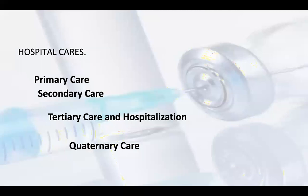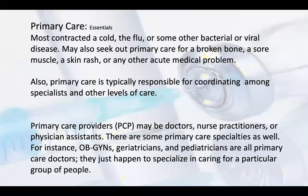There are various types of hospitals: primary care, secondary care, tertiary care, and quaternary care. In a primary care hospital, patients come with cold, flu, fever, or cough — such patients visit the outpatient department, are treated, given a prescription, take medication, and go home. Primary care is typically responsible for coordinating among specialists and other levels. If the patient is not cured there, he has to go to a secondary care hospital.